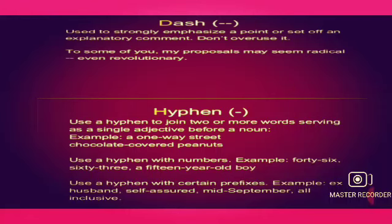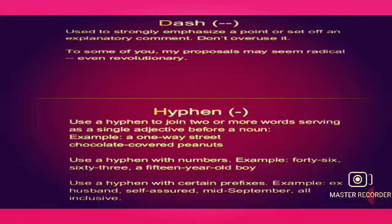Hyphen. Children, we use a hyphen to join two or more words serving as a single adjective before a noun. For example: a one-way street, chocolate-covered peanuts. Use a hyphen with numbers — for example: 46, 63, a 15-year-old boy. Use a hyphen with certain prefixes — for example: ex-husband, self-assured, mid-September, all-inclusive.